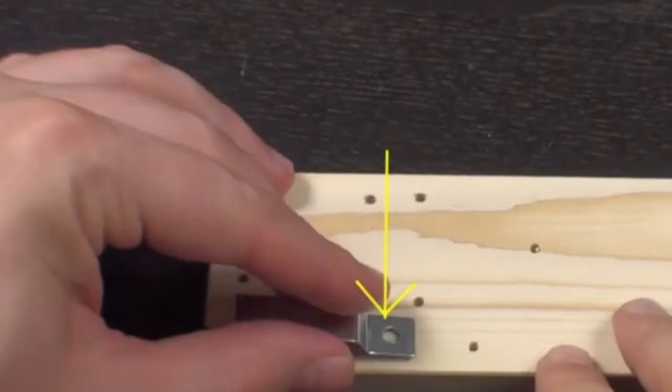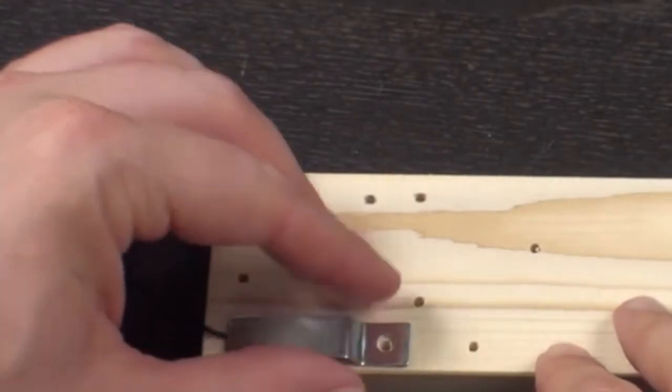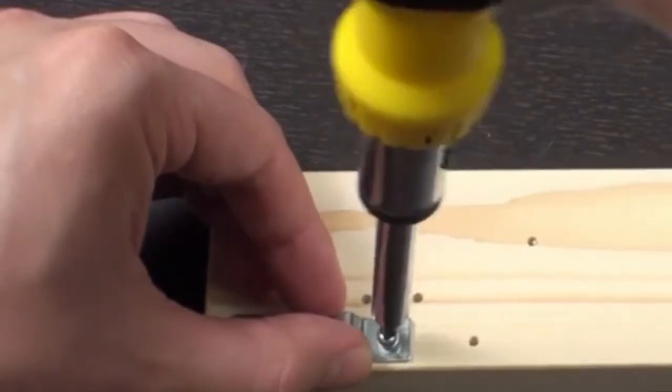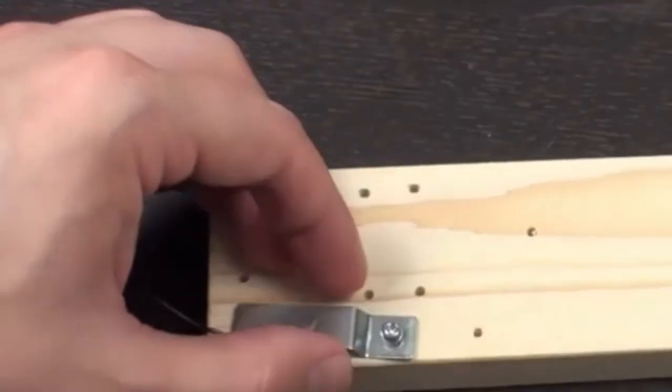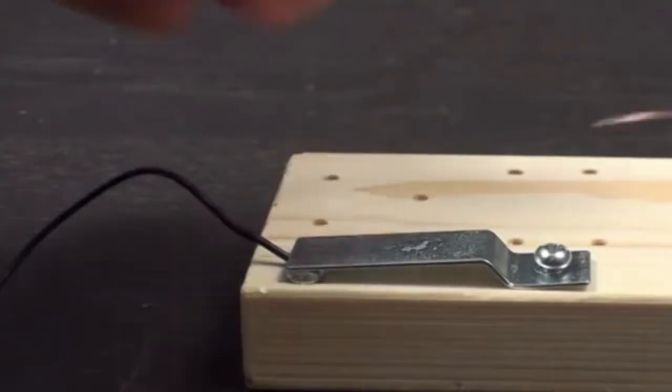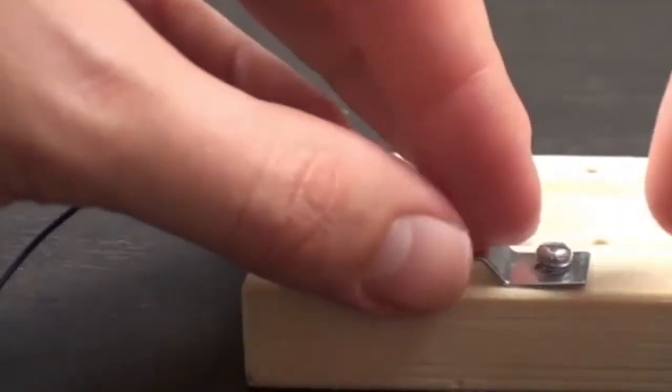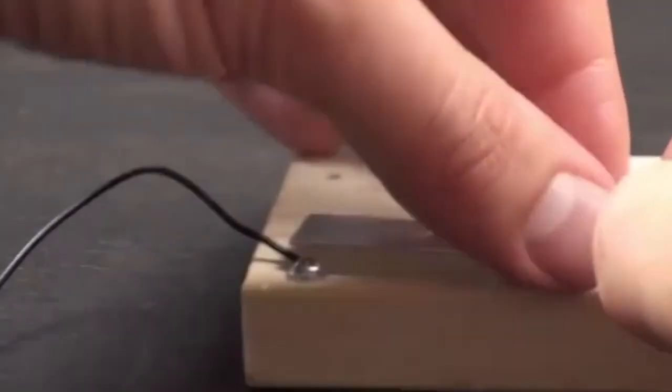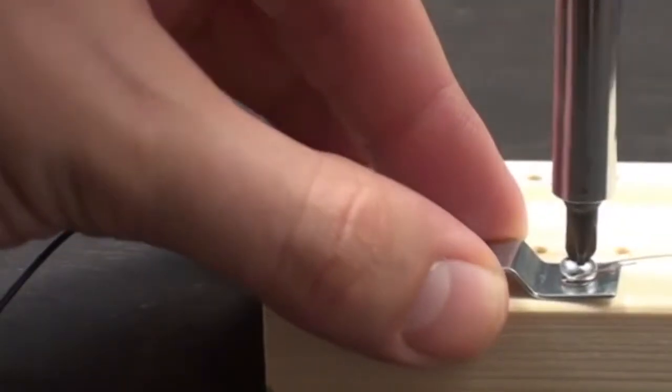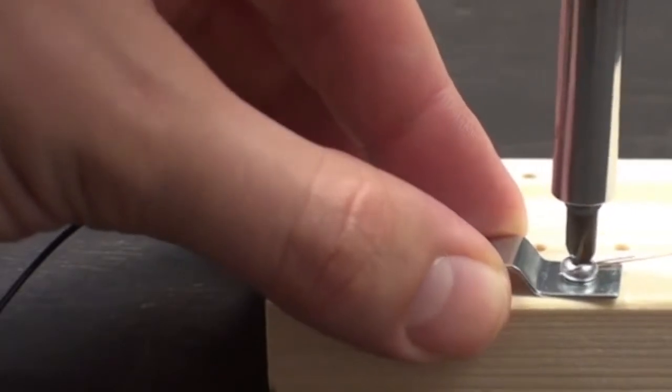Now take the bent piece of sheet metal and screw it onto the block as shown. The end of the sheet metal should be over the first screw. Before screwing the sheet metal all the way in, loop the lead from the magnetic coil around the screw. Screw the sheet metal down all the way securing the lead into place.